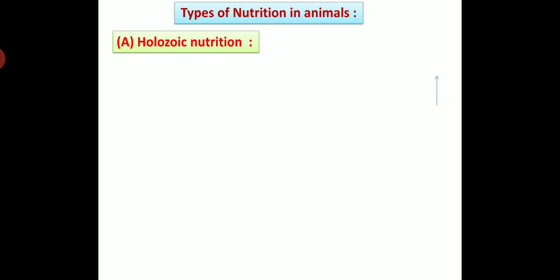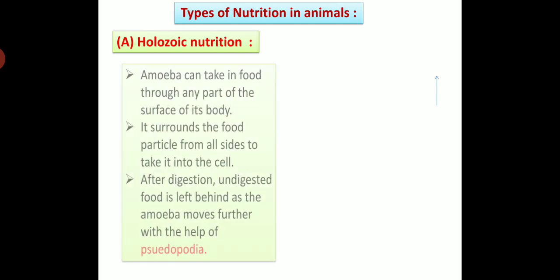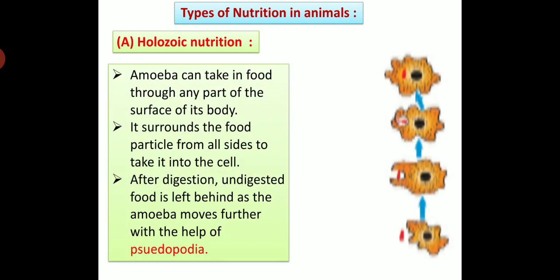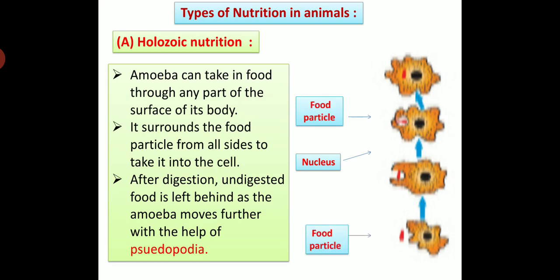Now we are going to see the different types of nutrition in animals. First type: Holozoic Nutrition. Amoeba is a unicellular organism, so all life processes take place in a single cell. You can see in the diagram that amoeba can take in food through any part of the surface of its body.